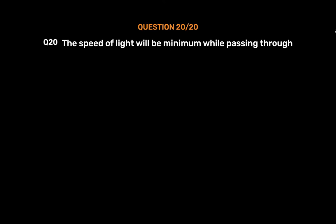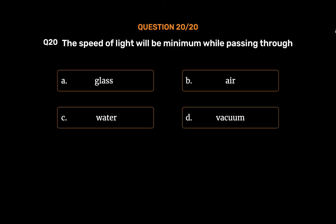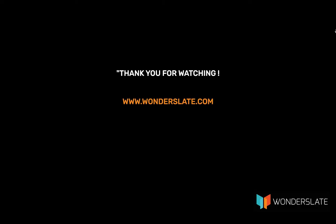Question No. 20: The speed of light will be minimum while passing through — Option A: Glass, Option B: Air, Option C: Water, Option D: Vacuum. The correct answer is Option A: Glass. Thank you for watching the video.